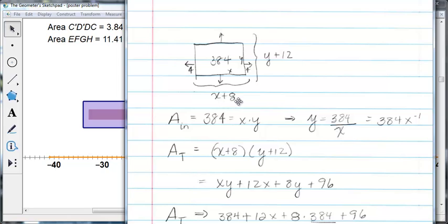So the area that we want to maximize has an area of x plus 8 times y plus 12. That's what I have written here. The other function we know is that the inner one, x times y, is always 384. So as usual, we have to solve for one of the variables.